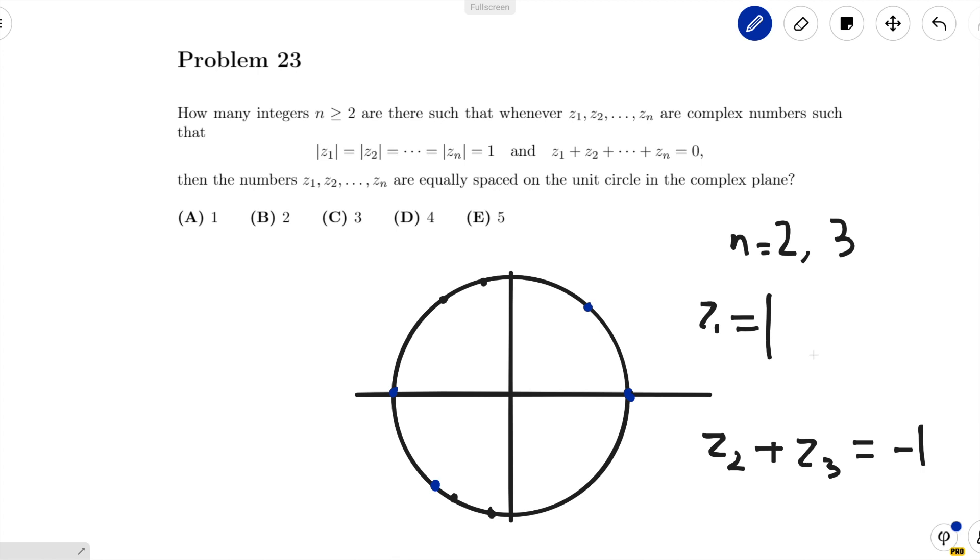And this also satisfies the condition, but the points aren't equally spaced. They add up to 0 because they're diametrically opposite with each other, and they all have magnitude 1 because they're on the unit circle, but they're not equally spaced. So n equals 4 doesn't work.